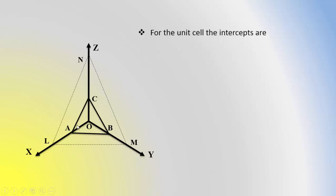For the unit cell A, B, C, the intercepts are: OA. This unit cell intercepts on the X axis at this point. So for this unit cell, the intercepts are OA equals A.